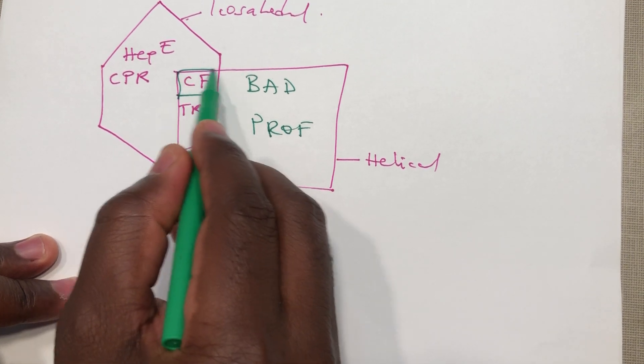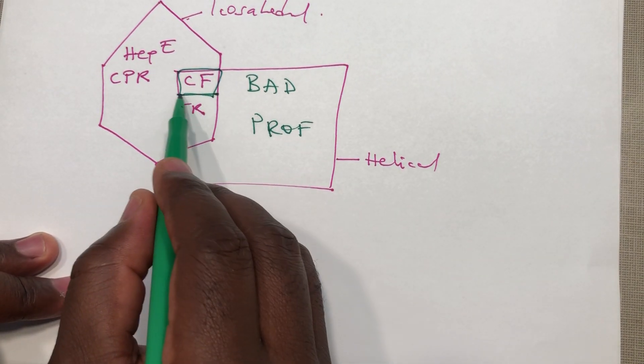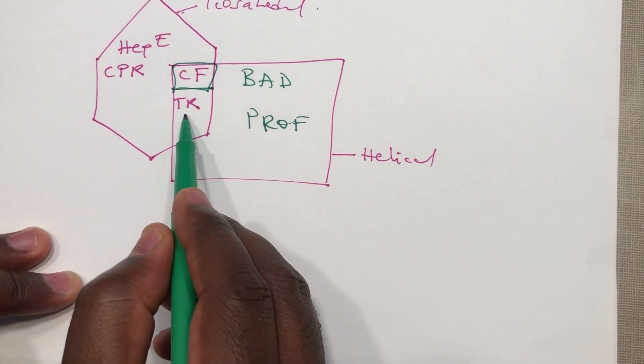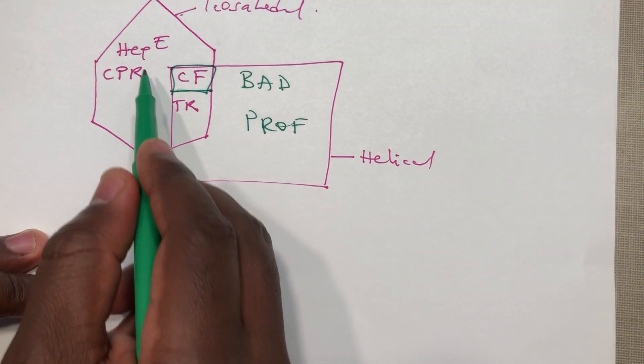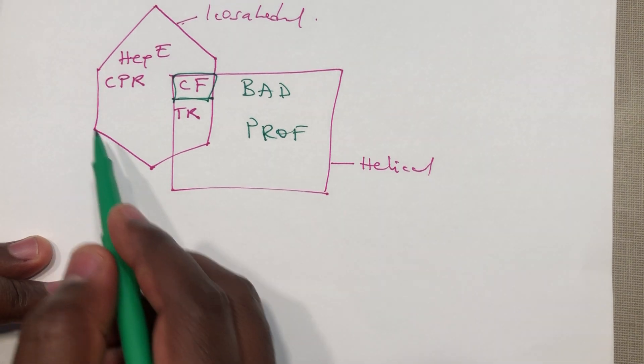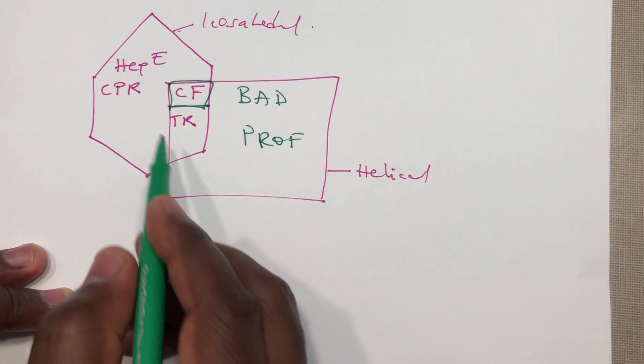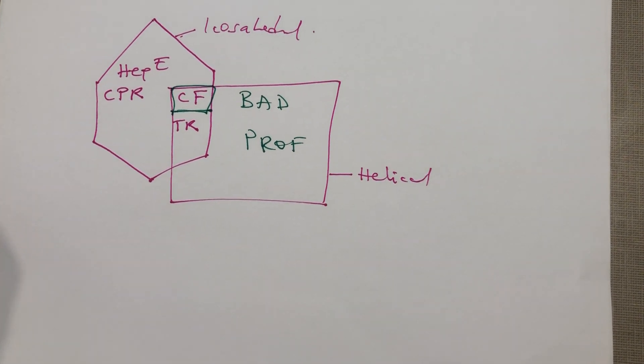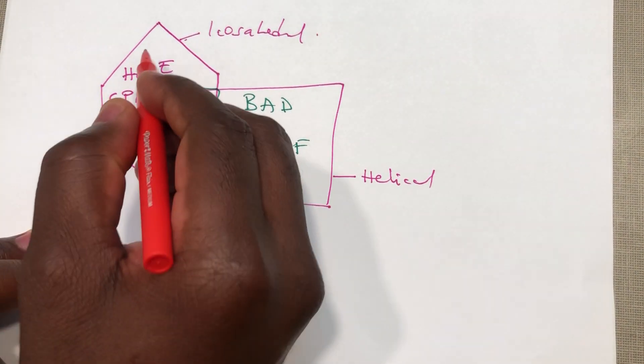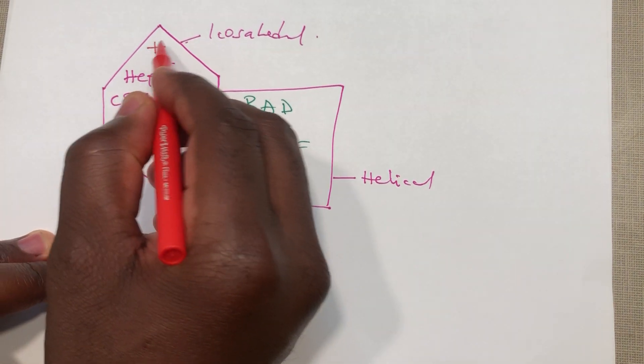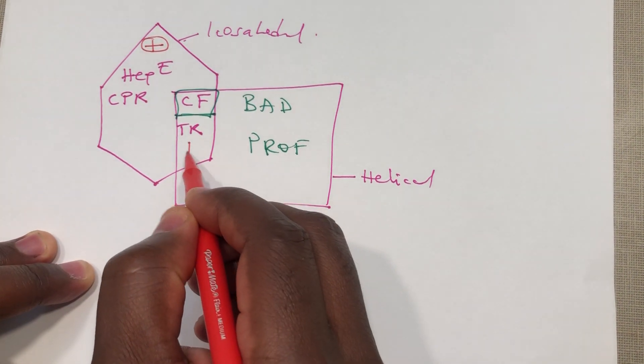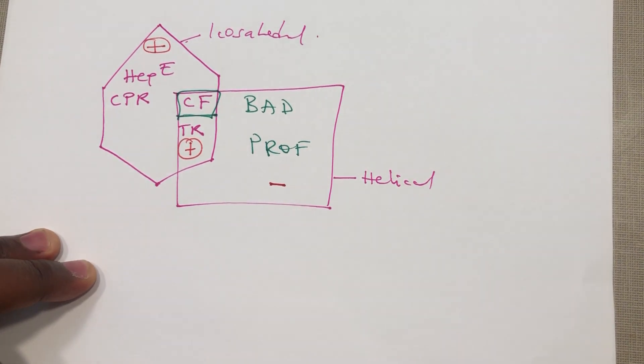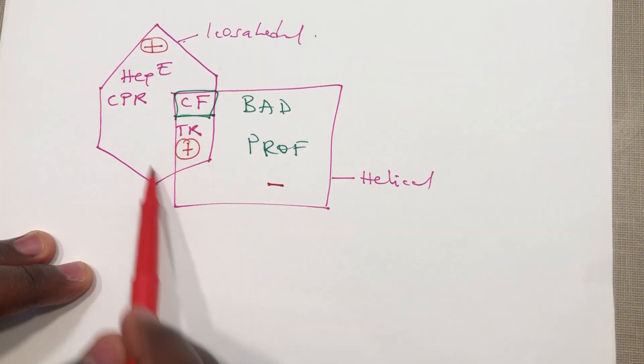The difference here is just these two. We'll draw a straight line here. CF over here is in a box so it is also helical, and TR is part of the icosahedral. For whether they are negative sense or positive sense, those all here are positive, positive, positive, negative.